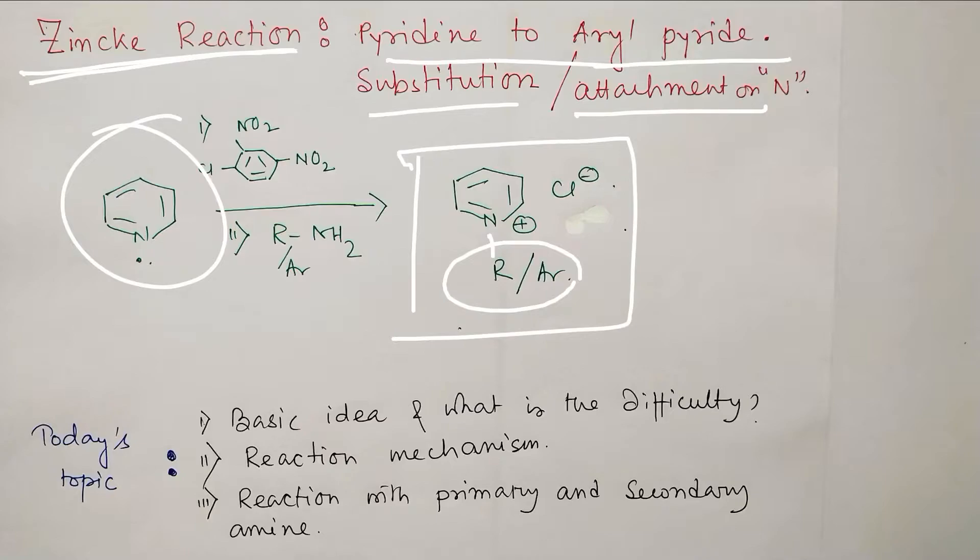This is a very interesting molecule. Very interesting chemistry is associated with this reaction. So today's topic of discussion will be the basic idea and where is the difficulty of this process, why this is interesting. After that we will discuss the reaction mechanism and reaction with primary and secondary amines, and some alternate route. If this R is one degree, could it be possible to do very easily some shortcut technique? We will discuss this.